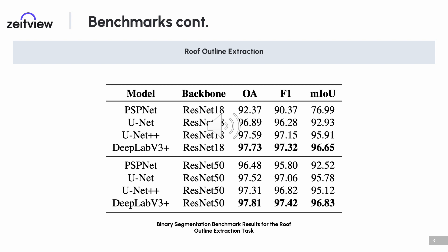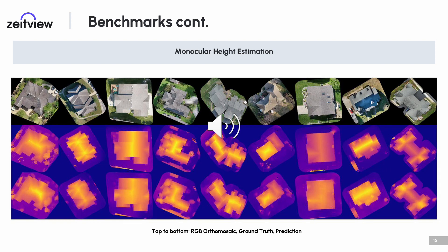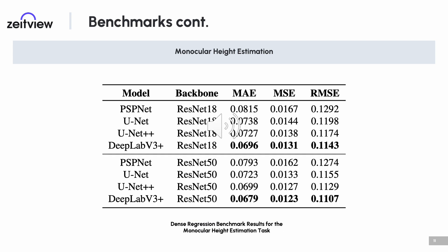We treat the task of monocular height estimation as a dense regression problem similar to monocular depth estimation, where we want to estimate the pixel-wise height of the rooftop and surrounding structures from a single overhead view. Accurate estimation of rooftop height from an overhead perspective allows for larger aerial scans to be performed without taking oblique imagery of each individual property. We again evaluate on the ZRG test subset using the same segmentation architectures, modified to have a continuous regression output.